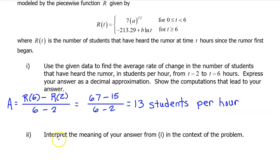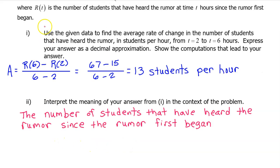Part 2: Interpret the meaning of your answer from part 1 in the context of the problem. I'm going to give you my interpretation in two slightly different ways. Watch how I include the definition of the given function in my interpretation. R of t is the number of students that have heard the rumor at time t hours since the rumor first began. So, the rate of change of R of t will begin as the number of students that have heard the rumor since the rumor first began.